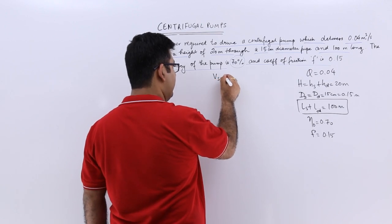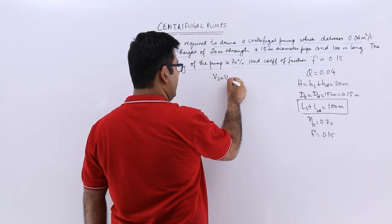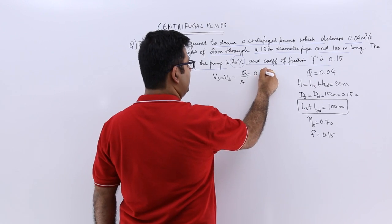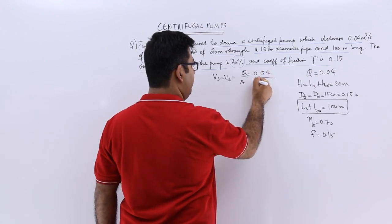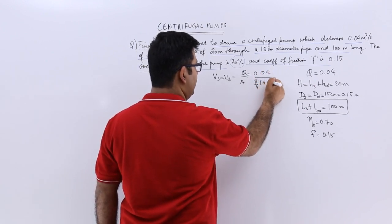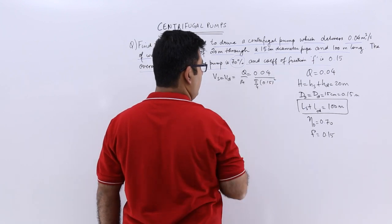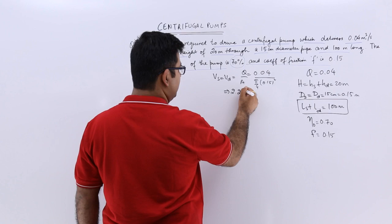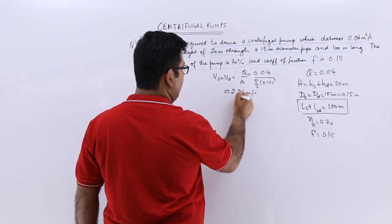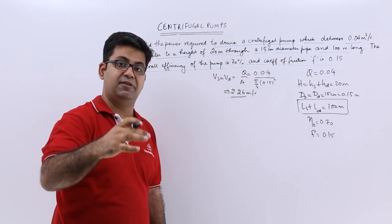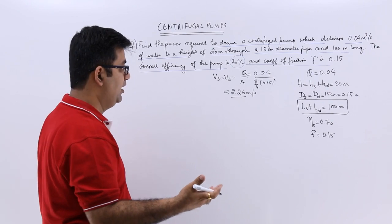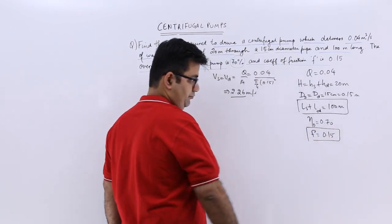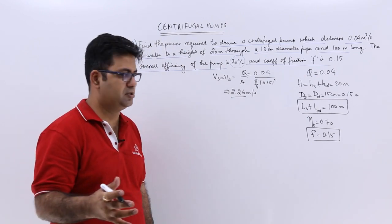Let's first find out the velocity. The velocity in the suction pipe equals the velocity in the discharge pipe: Q divided by area = 0.04 divided by (π/4 × 0.15²). This gives a velocity of 2.26 meters per second — that is the velocity in both the suction pipe and the discharge pipe. Now, since friction is present, let's calculate the total friction loss.